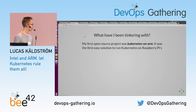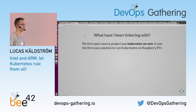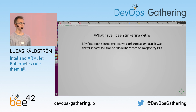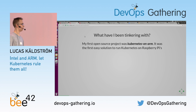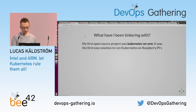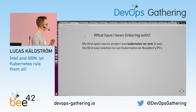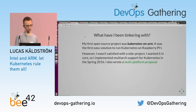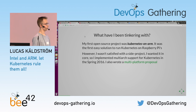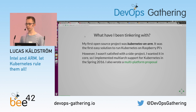So what have I been tinkering with? My first open source project was Kubernetes on ARM, and it was the first out-of-the-box solution to run Kubernetes on a Raspberry Pi or on a Banana Pro. I converted it to some other single-board computers as well. I maintained that for about eight months, until I got to merge everything into core, which was my original intention. I wasn't satisfied with having Kubernetes on ARM as a side project — I wanted that to be the official core functionality of Kubernetes.